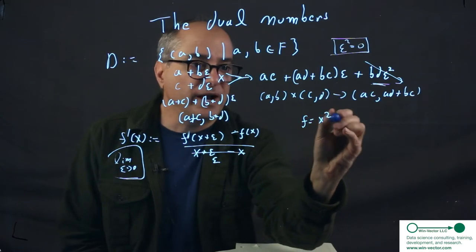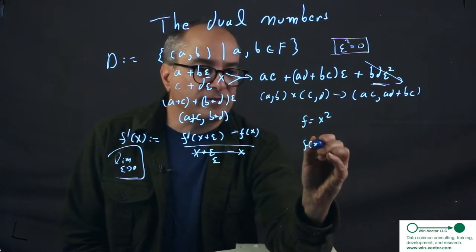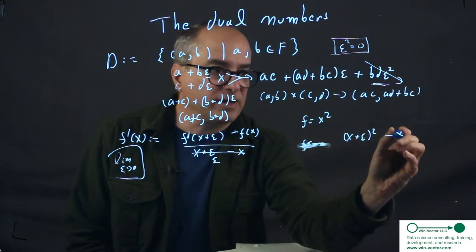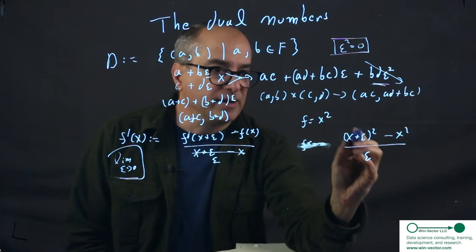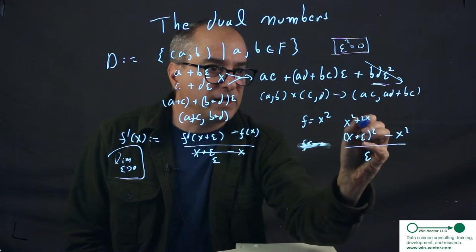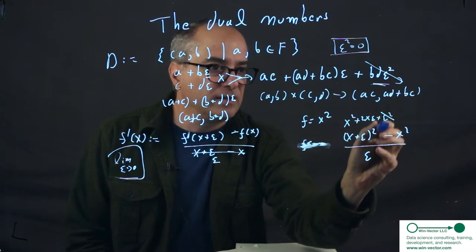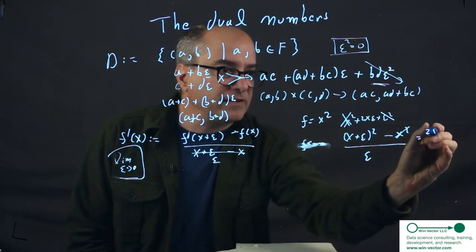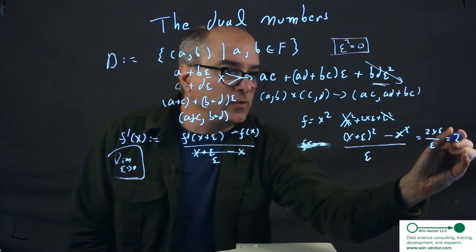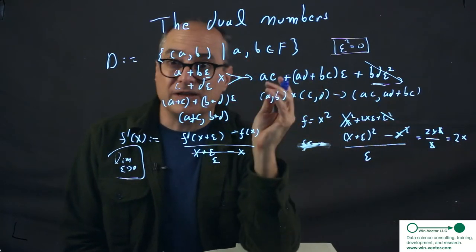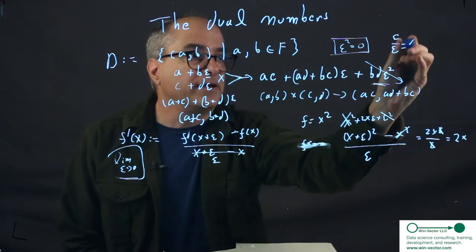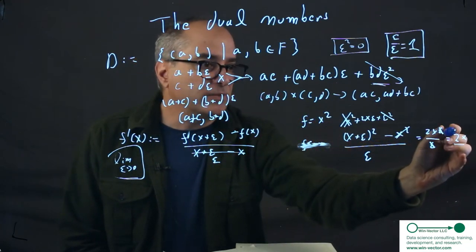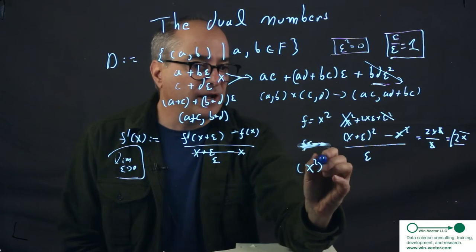Let's say f equals x² and try it. So f(x+ε) is (x+ε)² - x² over ε. This is x² + 2xε + ε². These two cancel. And we get 2xε over ε or 2x. Once we just use the convention that ε over ε equals one. So we have to add that as a convention, it's not implied by the arithmetic. And we get the right answer that (x²)' is 2x.